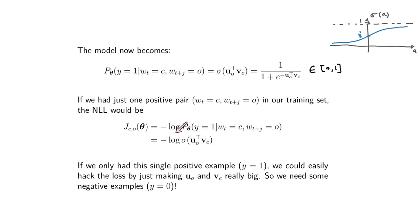The problem is, if you only do this, you've got an easy way to hack the loss function. Because you're just training on one positive pair with no negative examples, you can get this loss function very close to zero — you just make the word embeddings very, very big. Big positive numbers give a big dot product, the sigmoid of a big number is close to one, and the log of one is close to zero. This is just standard machine learning: you can't train on only positive examples, you also need negative examples. Otherwise, you end up hacking your loss function in a non-sensible way.